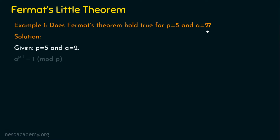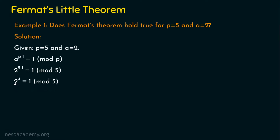Let's prove this. As per Fermat's Theorem, a to the power p minus one is congruent to one mod p. Substituting the values, we get two to the power five minus one, which is congruent to one mod five. Two to the power five minus one is two to the power four. So two to the power four is congruent to one mod five. Since two to the power four equals sixteen, we get sixteen is congruent to one mod five.